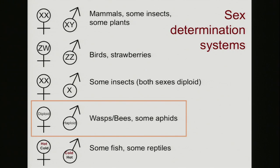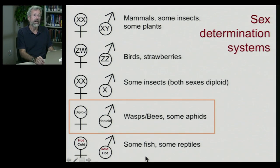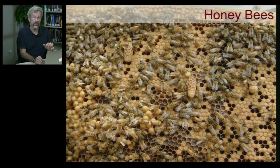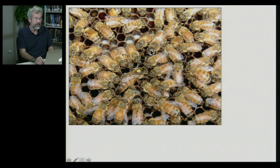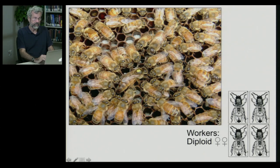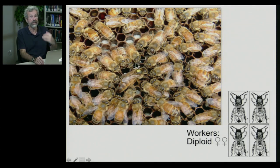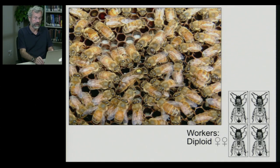Recall from the last lecture that social insects — wasps, bees, and some aphids — have a very peculiar reproductive system: sex determination by haplodiploidy, where females are diploid and males are haploid. Honey bees are eusocial and haplodiploid. Within the thriving hive, workers exhibit hygienic behavior — feeding eggs and pupae, removing sick pupae, uncapping cells, collecting pollen. Workers are all diploid and female.